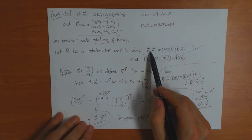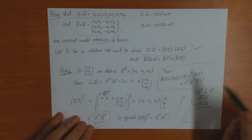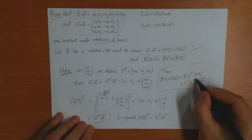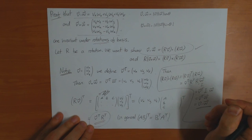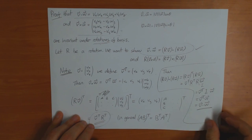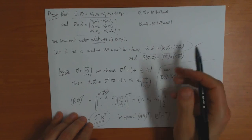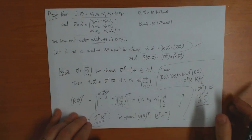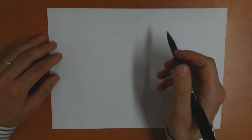The scalar product is unchanged by rotations, and the critical point is that rotations correspond to orthogonal matrices. Now the second part — proving invariance for the vector product — is slightly more tricky, but not much more.